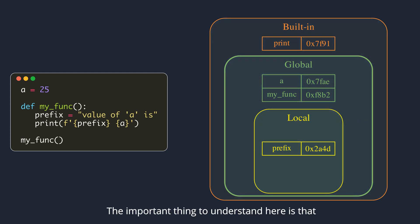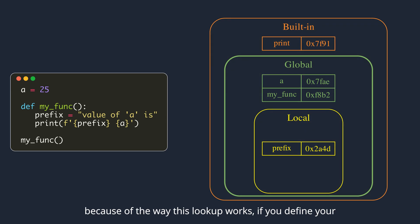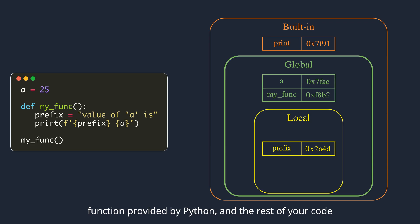The important thing to understand here is that because of the way this lookup works, if you define your own function with the name print, it will mask the print function provided by Python, and the rest of your code will use this masked function.